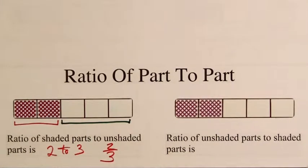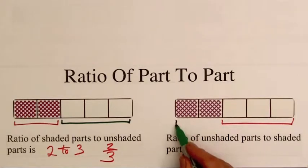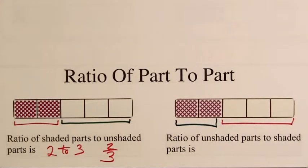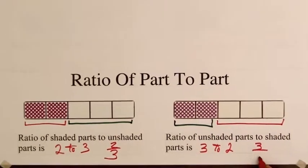Similarly, the ratio of the number of unshaded parts, 3, to the number of shaded parts, 2, is 3 to 2, or 3 halves.